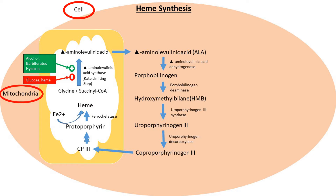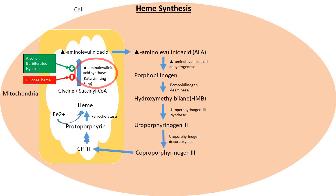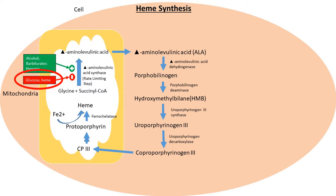Here is a diagram showing a cell with the mitochondria and the cytosol. Heme synthesis takes place in both compartments. Glycine and succinyl CoA combine inside the mitochondria to produce delta-aminolevulinic acid (ALA) using the enzyme ALA synthase, which is also the rate-limiting enzyme of this pathway. It is stimulated by alcohol, barbiturates, and hypoxia, and inhibited by glucose and heme.